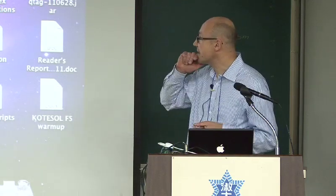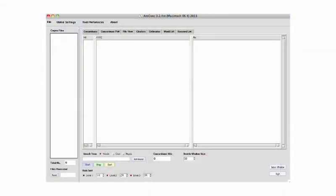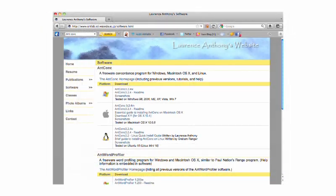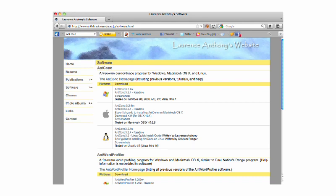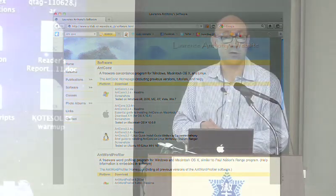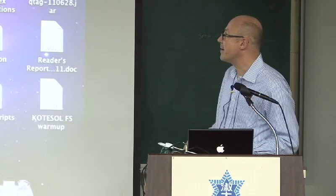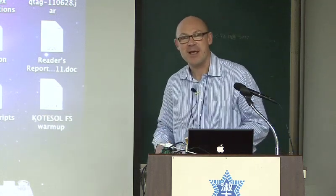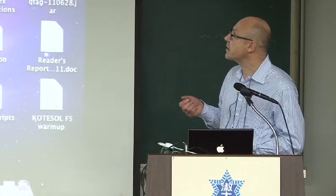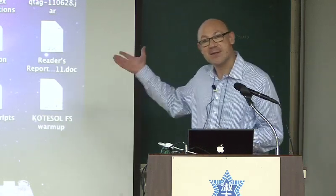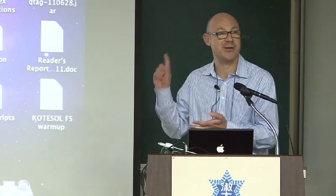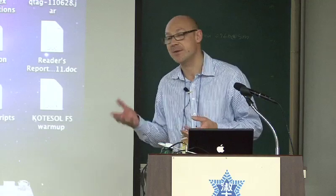This piece of software is called AntConc — A-N-T-C-O-N-C. It's on the handout and it's completely free. It was written by Lawrence Antony, a professor at Waseda University in Tokyo, who did our MA program some years ago and then wrote this software package. Some of you will know a program called Wordsmith Tools — that's a very good package, but it costs quite a lot of money. This is absolutely free. It also comes in different flavours: a Windows version, a Macintosh version, or a Linux version.